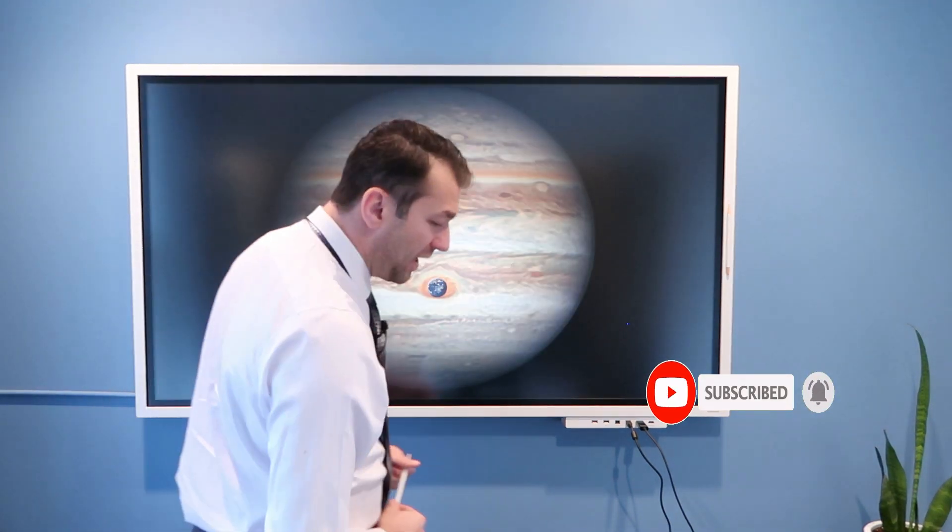Now, other planets in our solar system are Saturn, Uranus, Neptune. Saturn has these beautiful rings. These rings, we believe, are a consequence of strong Saturn's gravity attracting comets and asteroids, as well as perhaps crushing one of its moon that came too close.